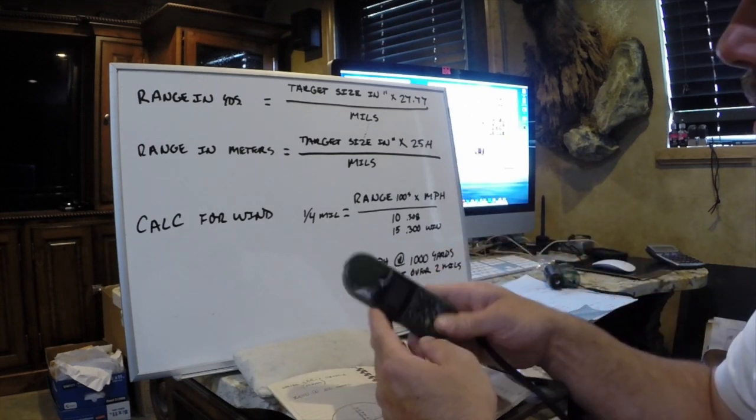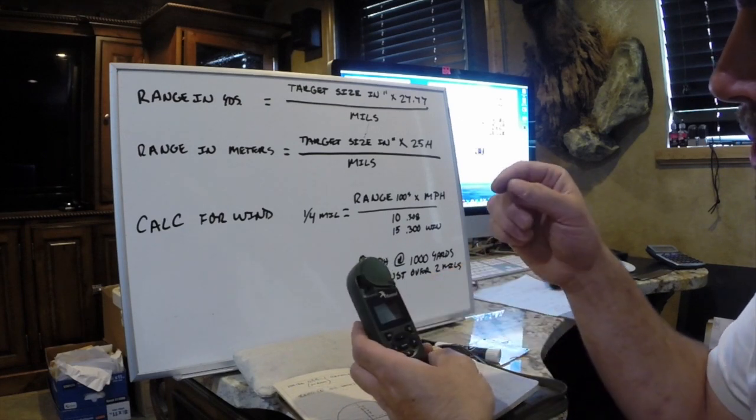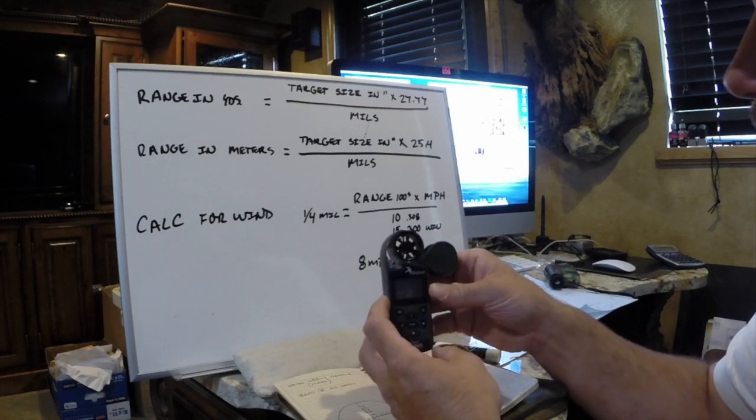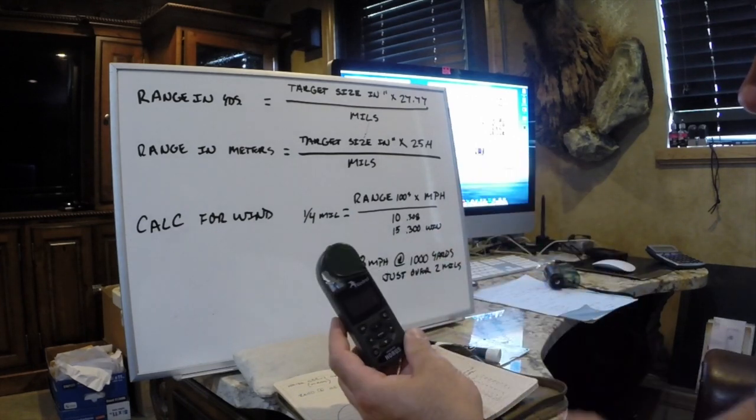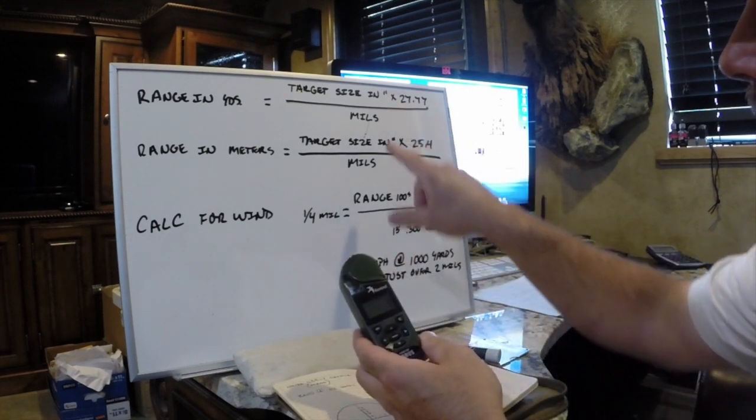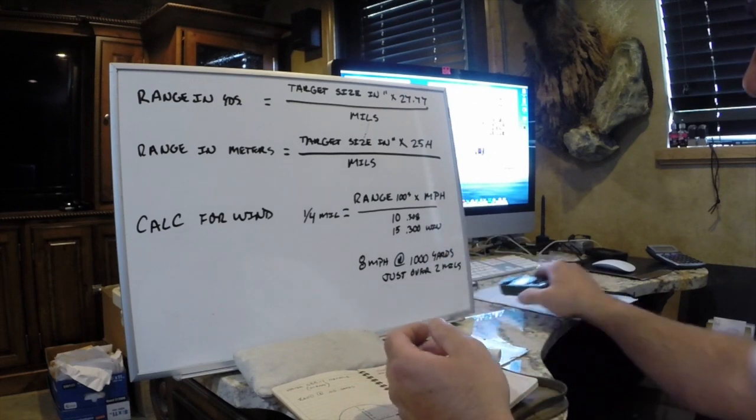There is a cool other way to do it. This is a Kestrel with Horus software. So this will sample the altitude, the temperature, the barometric pressure, the humidity, the wind, and it'll plot everything for you. And this thing is amazing. I don't necessarily want to rely on this. I still want to have the basic math in my head. But it's a good way to do it.